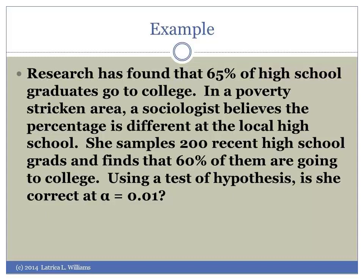Research has found that 65% of high school graduates go to college. In a poverty-stricken area, a sociologist believes the percentage is different at the local high school. She samples 200 recent high school grads and finds that 60% of them are going to college. Using a test of hypothesis, is she correct at alpha equaling .01?